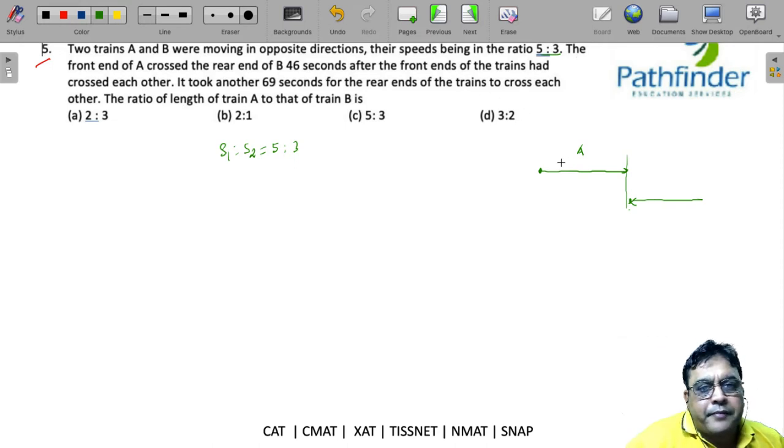crossed the rear end of B. So if this is B, this point reaches here in 46 seconds. So effectively what the question is telling you is that train A has traveled the length of train B in 46 seconds.